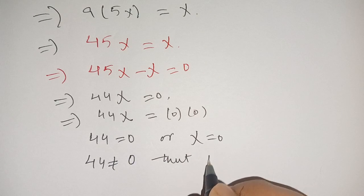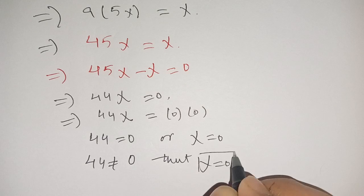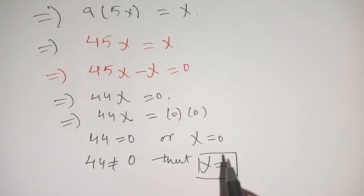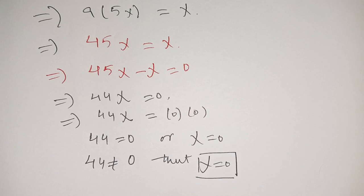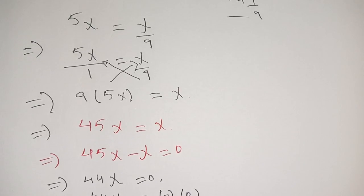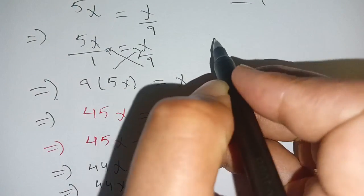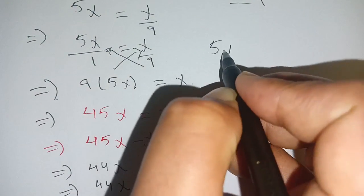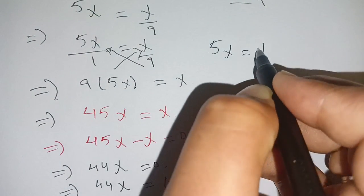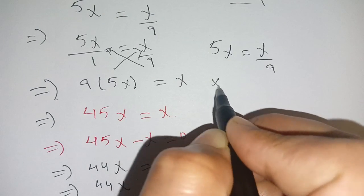But 44 cannot equal zero. Thus the only solution is x is equal to 0. Let us check that this is indeed our solution by substituting back into the original equation.